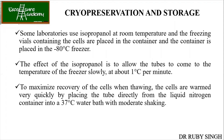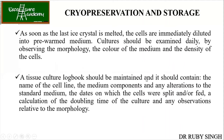To maximize the recovery of cells when thawing, the cells are warmed very quickly by placing the tube directly from liquid nitrogen into a 37 degree Celsius water bath. This is what is called sudden thawing. Freezing will take an entire day process, but thawing will take only a little time. Directly from liquid nitrogen, you bring back to the 37 degree Celsius water bath. As soon as the ice crystal is melted, the cells are immediately diluted into pre-warmed medium.